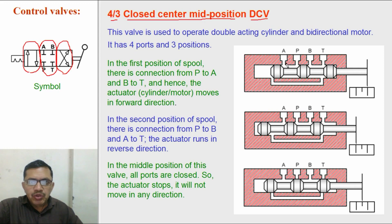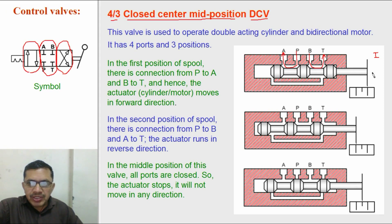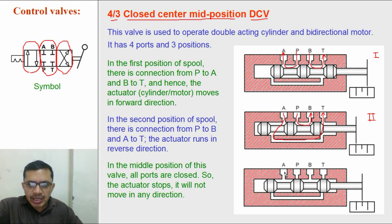This is the construction of the four by three closed center mid position direction control valve. In the first position there is connection from the pump port to cylinder port A, and from cylinder port B to tank port T. When we shift the lever of this valve, the spool will be shifted to the second position. In this second position there is connection from the pump port to cylinder port B, and from cylinder port A oil flows through the valve to tank port T.